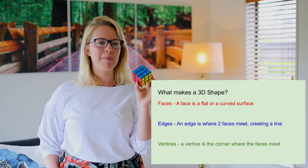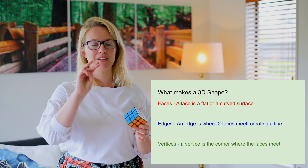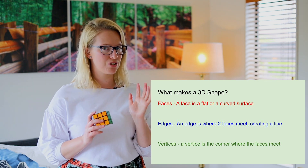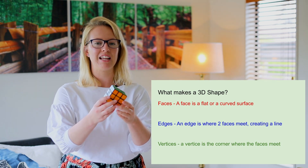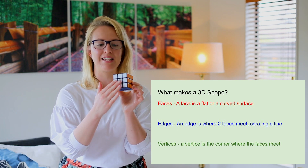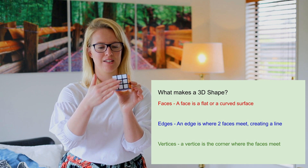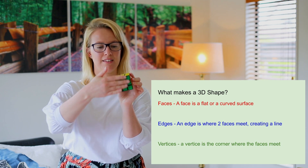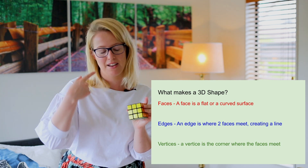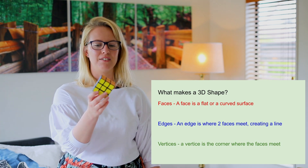Now what makes a 3D shape a 3D shape are three different things as well as the length, width and height — it's got some other bits to it. Each 3D shape has faces — one or more faces which is a flat or curved surface. So this is a face, this is a face, this is a face — a cube has lots of different faces.